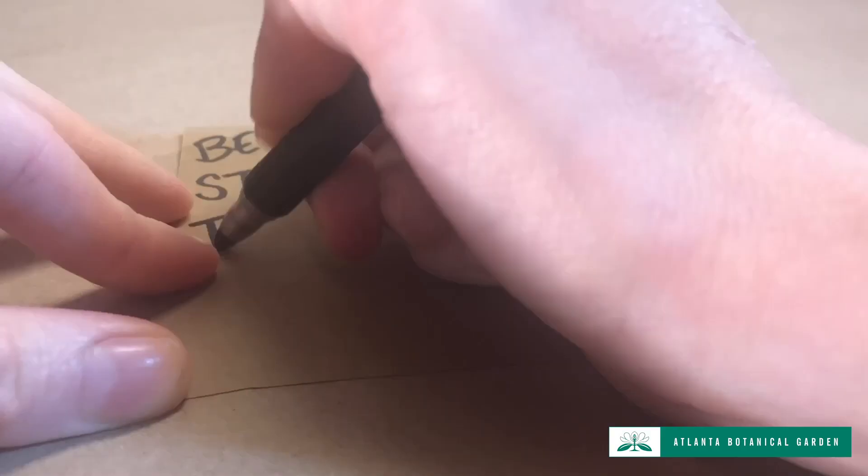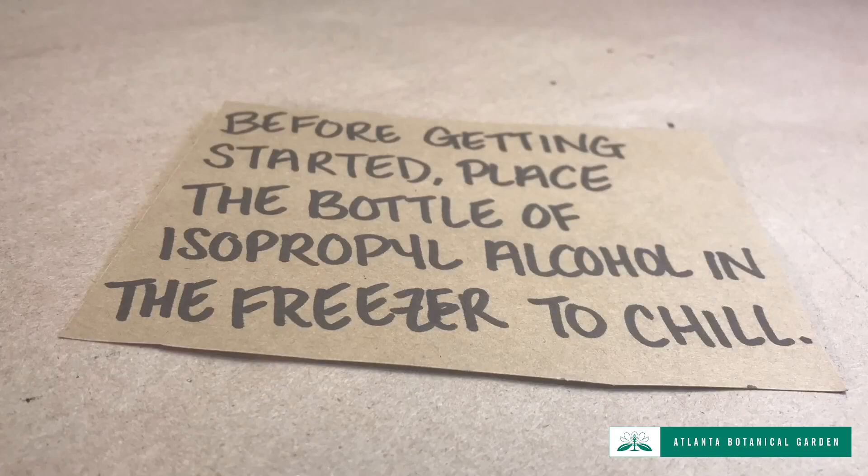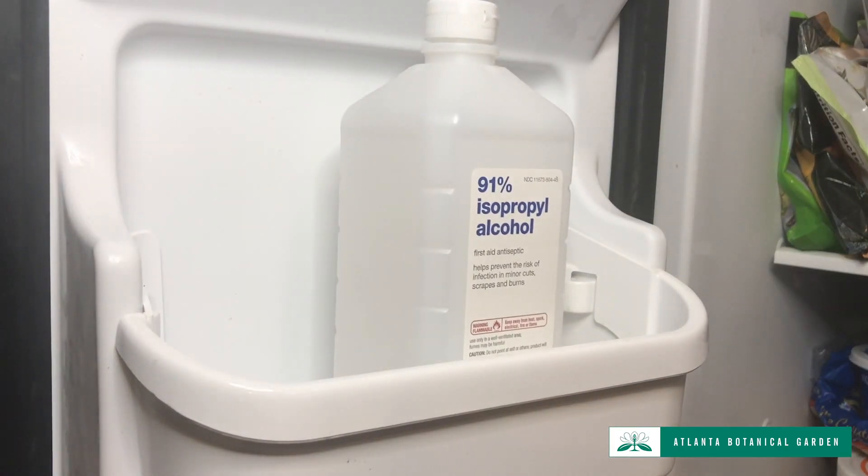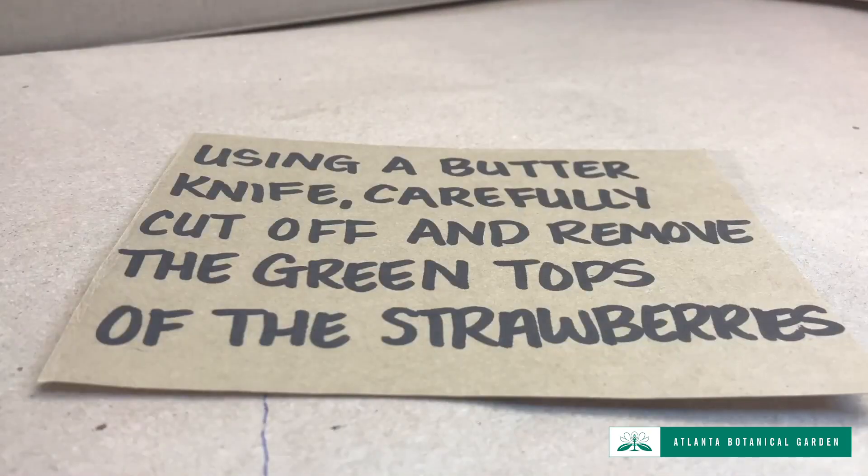Before getting started, place the bottle of isopropyl alcohol into the freezer to chill. Using a butter knife, carefully cut off and remove the green tops of the strawberries.